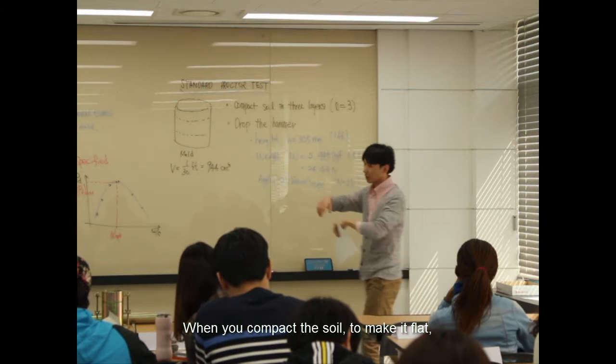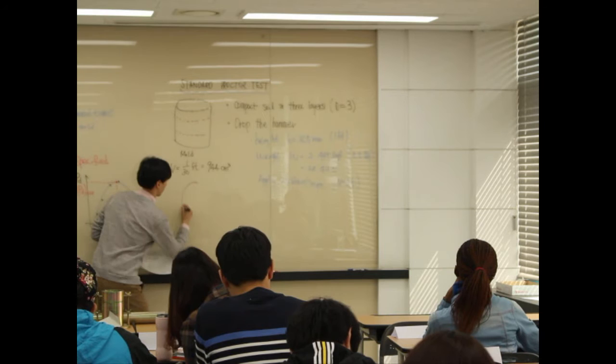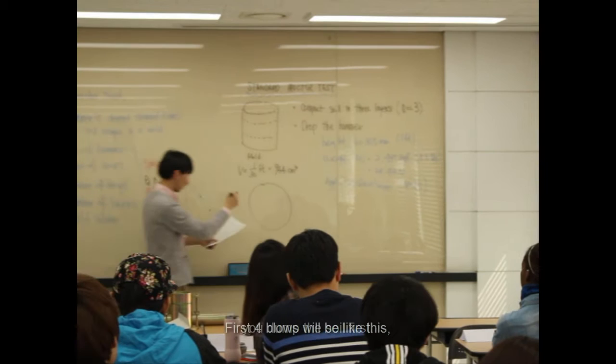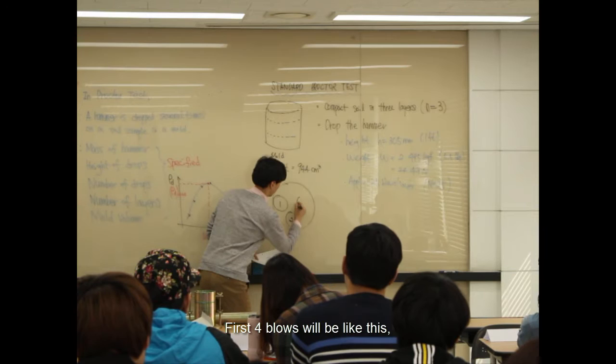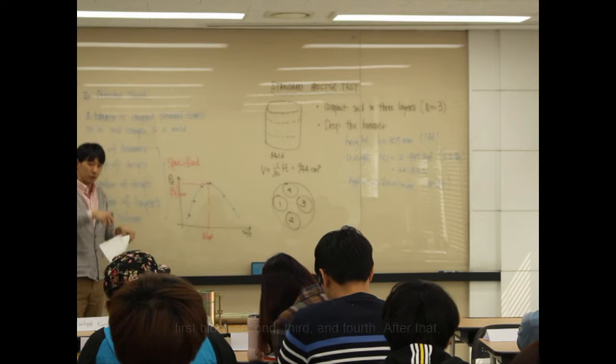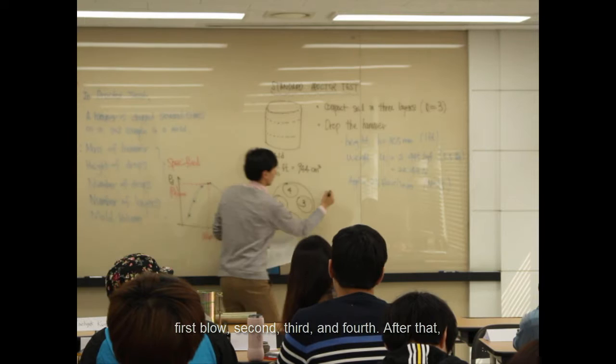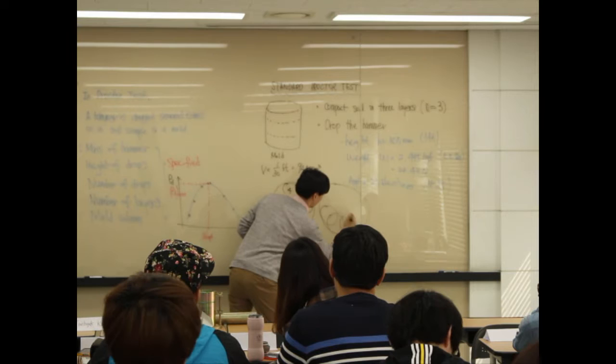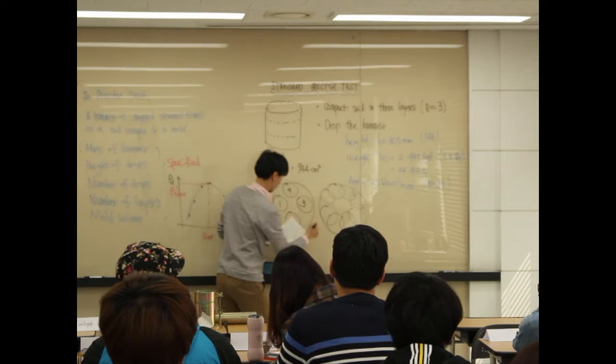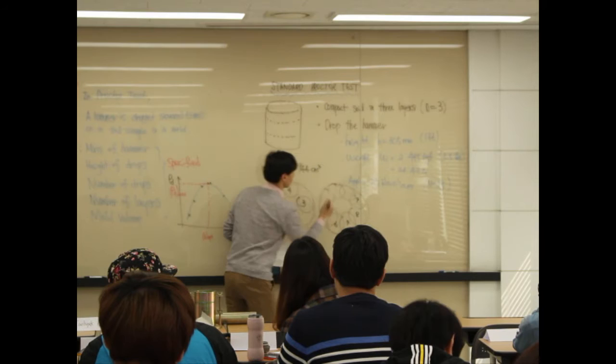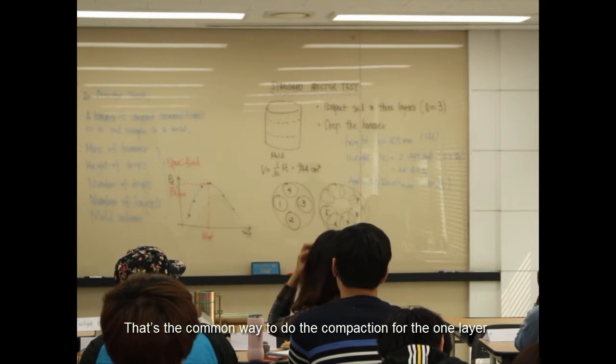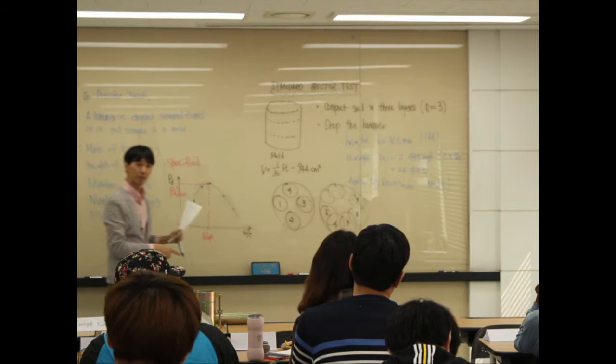When you compact the soil to make it flat, when you look at it from the top, you dump the soil first. The first four blows will be like this: one blow, two blow, third, and fourth. After that, you're going to go around in a spiral - 5, 6, 7, 8, 9, to make it 25. That's the common way to do the compaction for one layer.